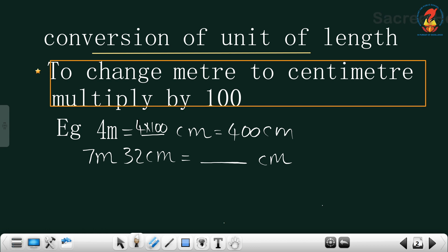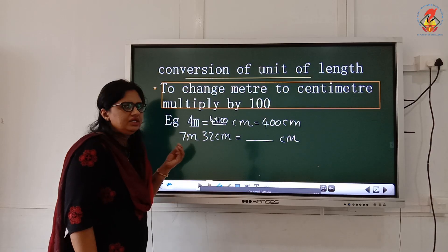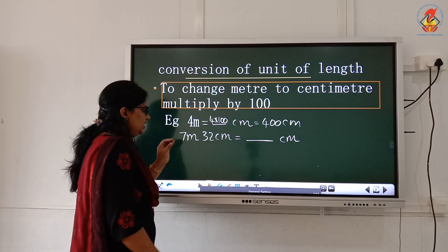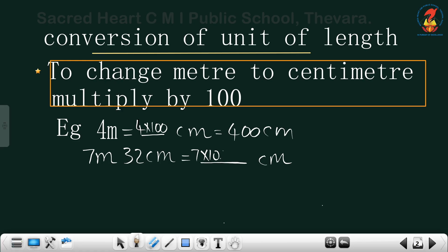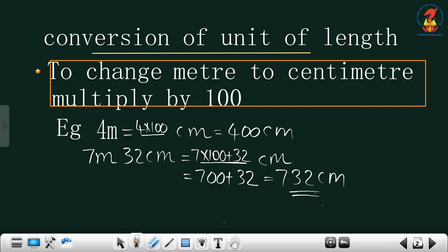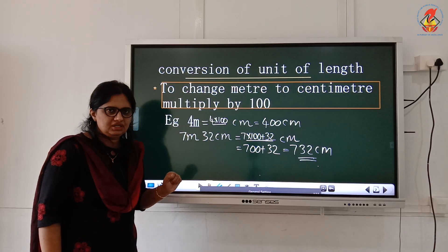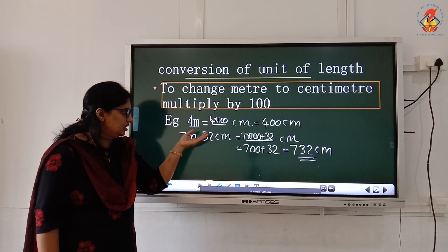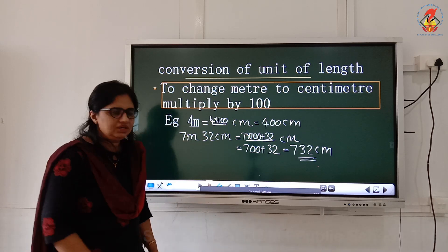And the next one is 7 meter 32 centimeter. Which part is in meter? The meter part we need to change into centimeter only. 7 into 100 centimeter, plus 32 also there. You need to add that 32 also. That is 700 plus 32 centimeter, that is 732 cm. So here 7 meter and 32 centimeter: 7 meter equals 700 centimeter plus 32, you will get 732 centimeter.